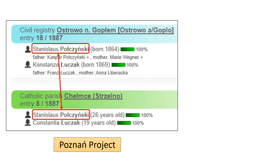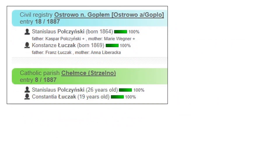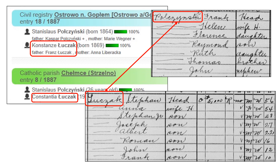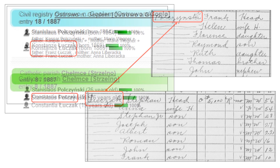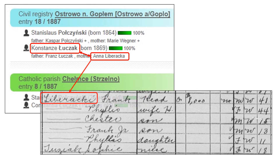Here is a Poznan Project search for Stanislaus Polchensky. Stanislaus was the father of Frank and Tom. We also see that the mother of Frank and Tom was a Luchak, which begins to tie the genealogical record to the census record. And we also see that Konstanza Luchak's mother was a Liberatska, which ties the genealogical record even closer to the census record.